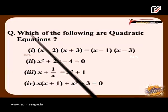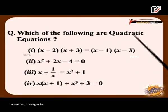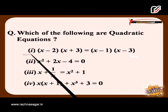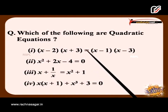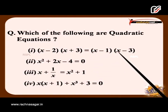The question is: which of the following are quadratic equations? First, (x - 2)(x + 3) = (x - 1)(x - 3).